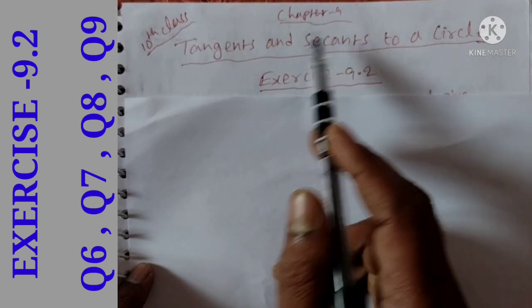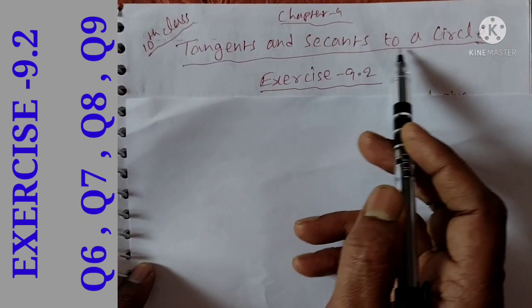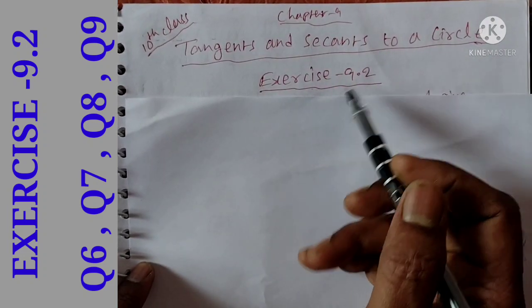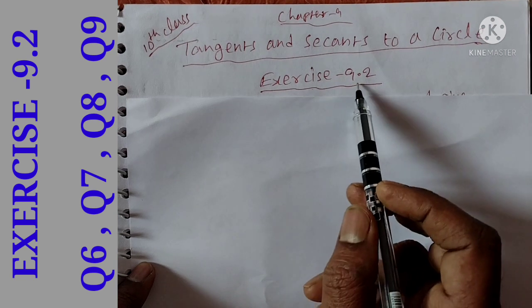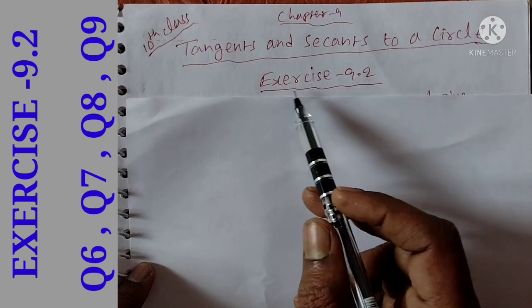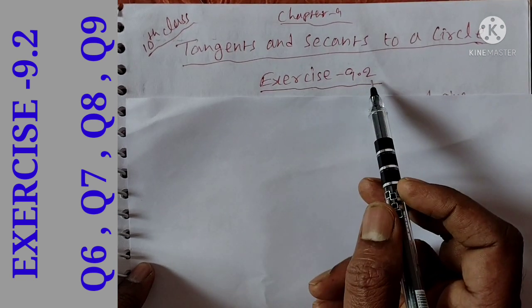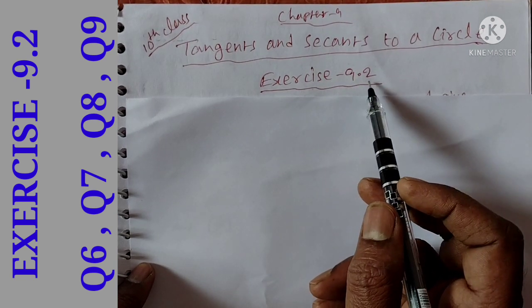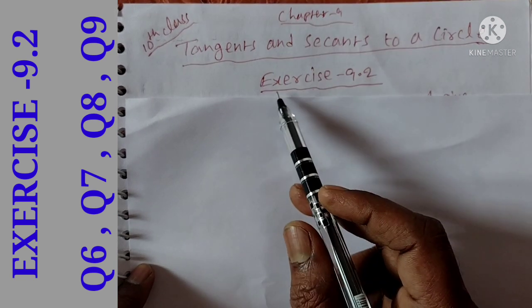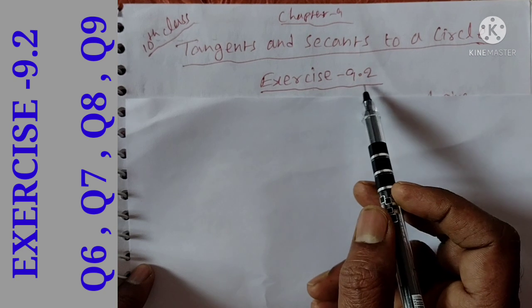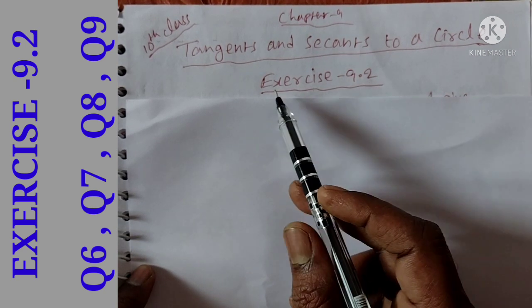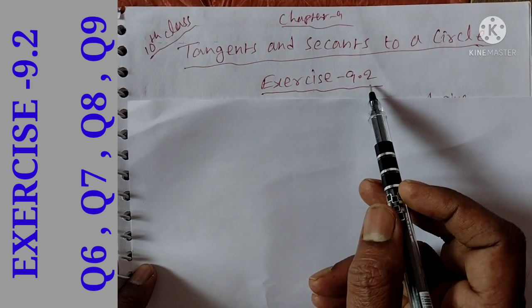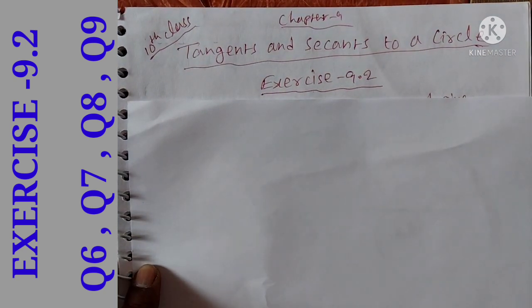10th class, chapter 9, Tangents and Secants to a Circle. In the previous video we completed 5 sums in exercise 9.1 and 9.2. Now we will complete the 6th sum in this video. Exercise 9.2, question 6.